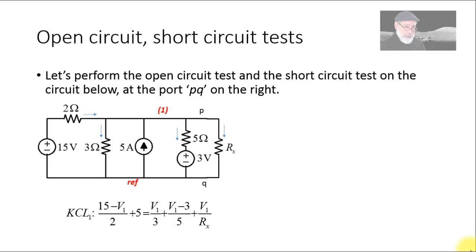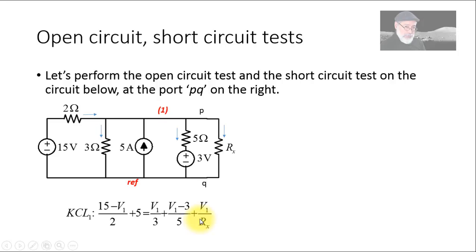That gives the KCL equation for the only node at the top. Current flowing in from the left: (15 − V1) divided by 2 ohms, plus the current pushed up by the 5-amp current source — two terms. That equals the currents leaving the node: V1 over 3, plus (V1 − 3) over 5, and finally Ix, the current through the external resistor, which is V1 over Rx.